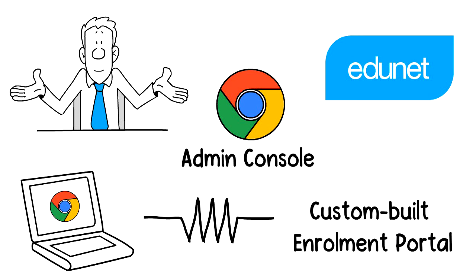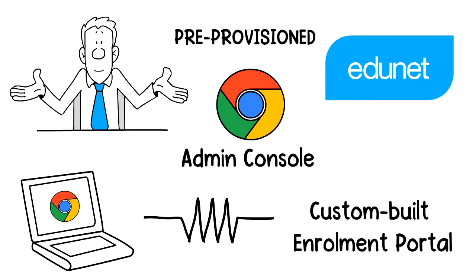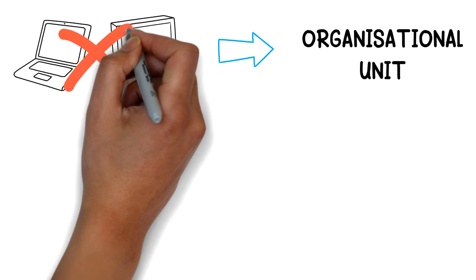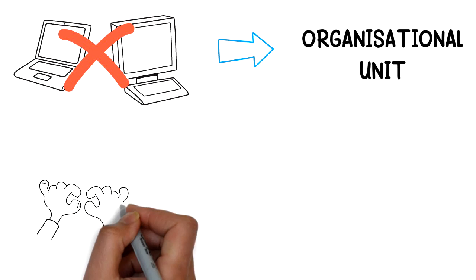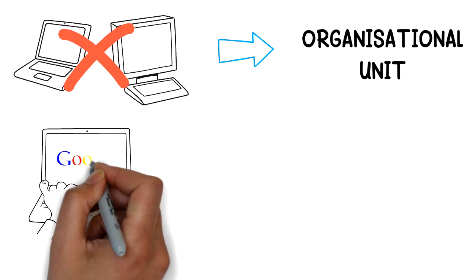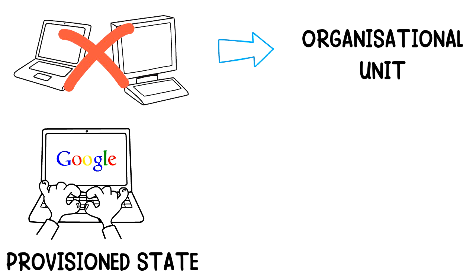Devices will begin to appear in your console in the pre-provisioned state. These devices can be moved to a different organisational unit, or removed if no longer required. Once the end user has completed their first login to the device, enrolment is complete and the device will then transition to the provisioned state.